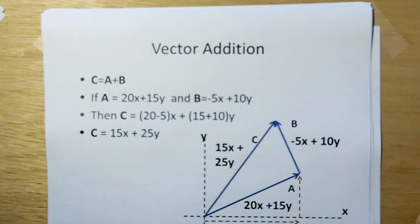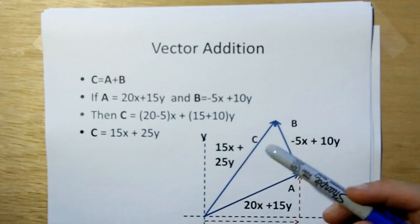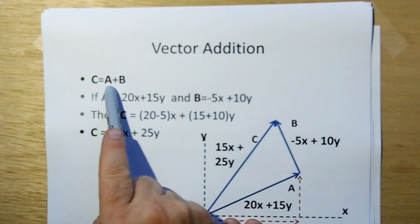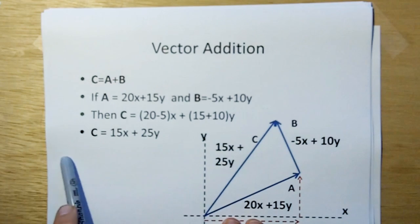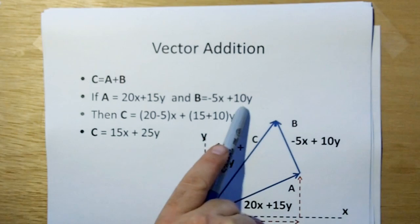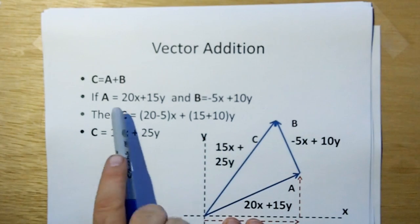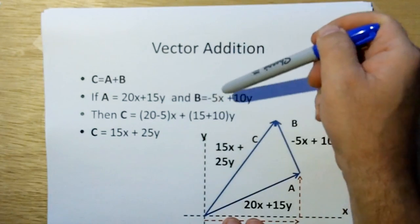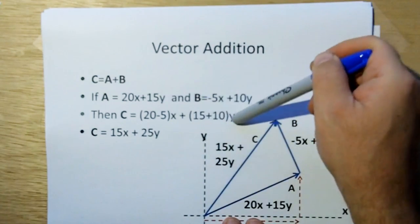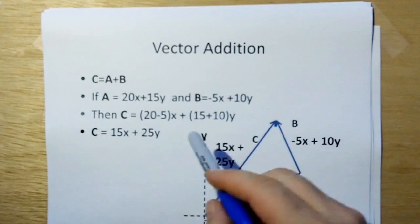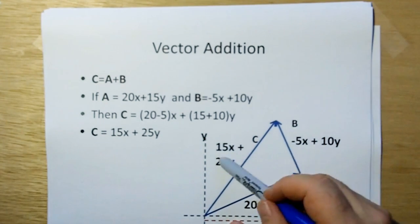Now vector addition is quite simple. In Cartesian coordinates, vector addition is represented that vector C is equal to vector A plus vector B. If A is 20x plus 15y, and B is minus 5x plus 10y, then C is just the summation of the two where you sum the x components for x and you sum the y components for y, which would give you the result of 15x plus 25y. You could do it graphically like this and you would get the same answer.